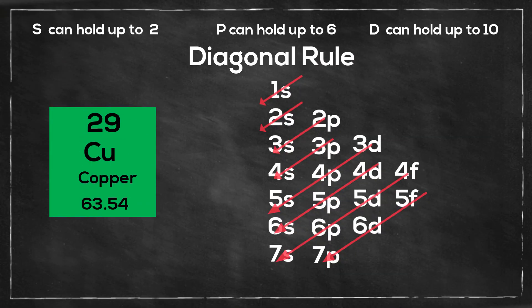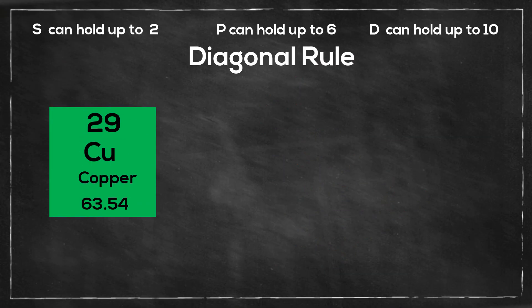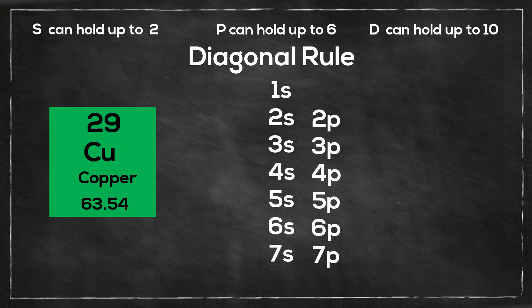If you set up the diagonal rule you draw in your s's 1 through 7, then your p's, then your d's, then your f's.